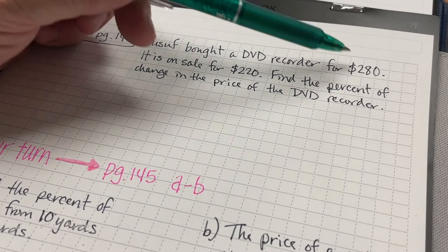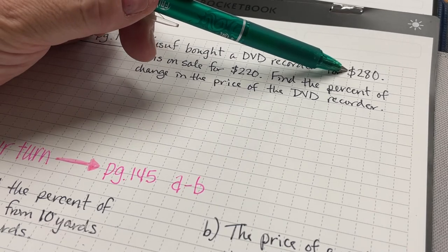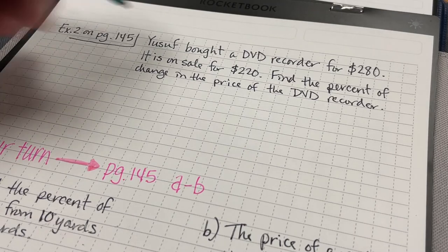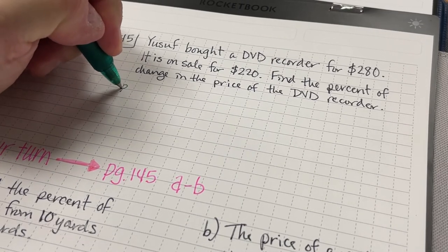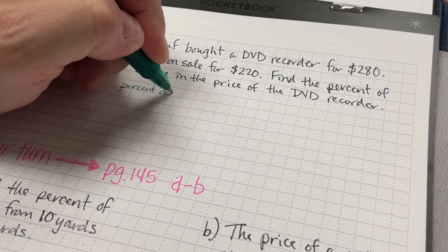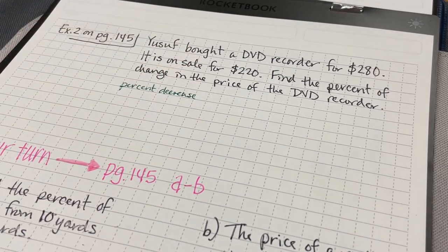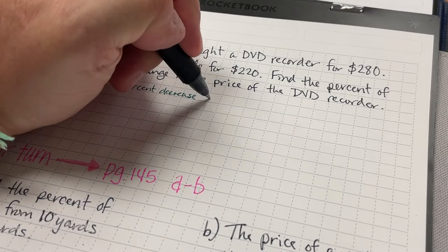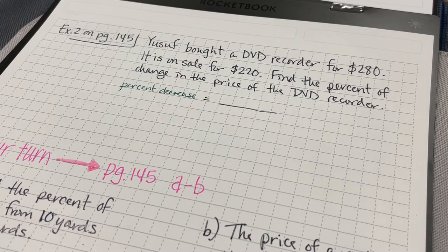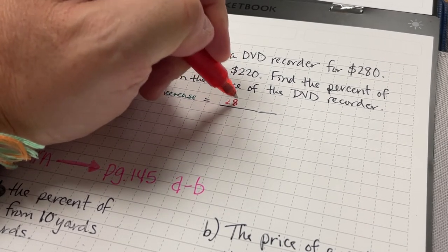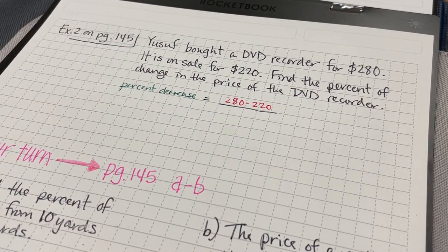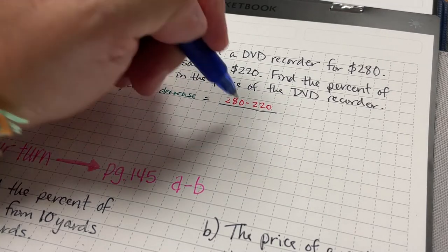Well, first thing that I recognize is that the price used to be $280, it's now down to $220. So that's a percent decrease. So what that means is I'm going to have $280 minus $220 over the original amount, which was $280.